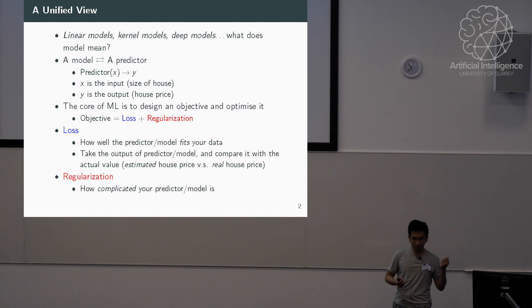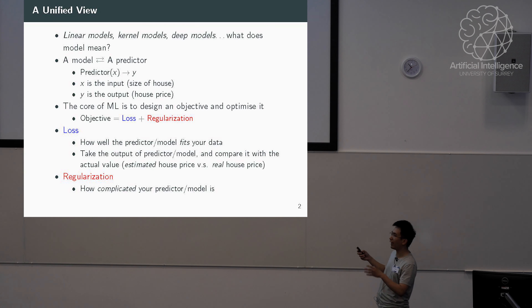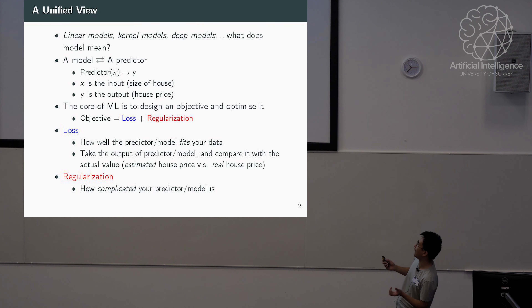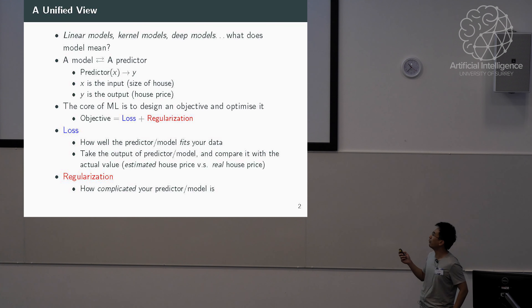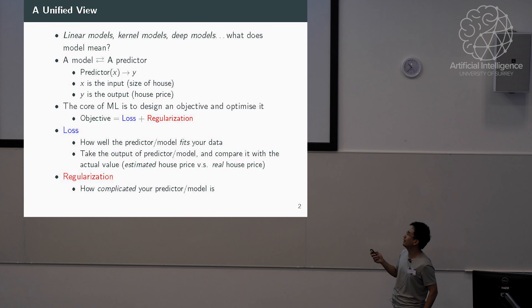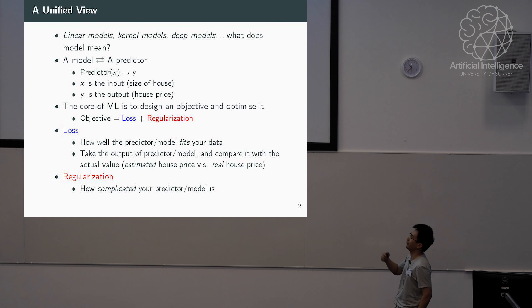In the house pricing problem Sherry just showed, you can think of your predictor as a function — you feed the size of a house and it gives you an estimated price for that house. So X means our input, Y means our output. You feed the input X into your predictor or machine learning model and it gives you a prediction.